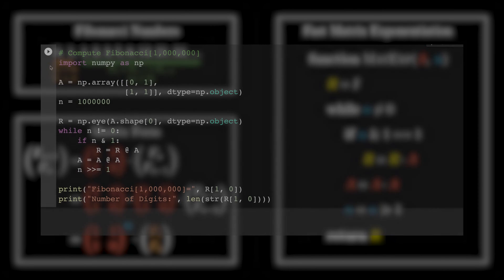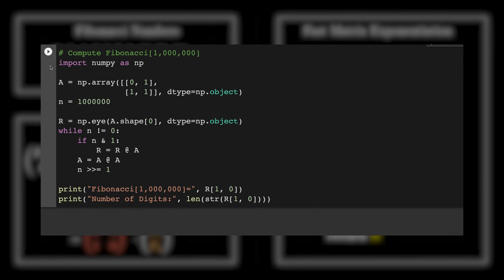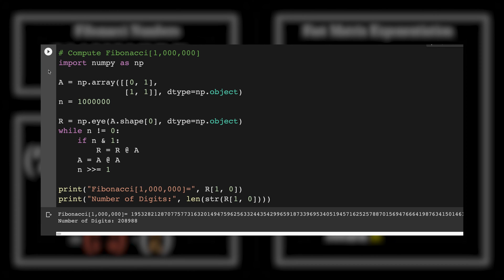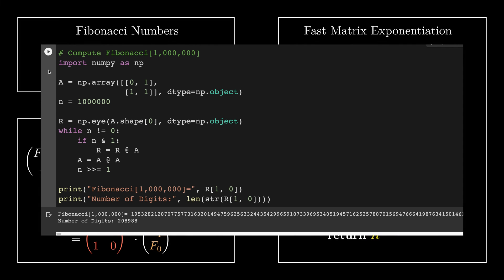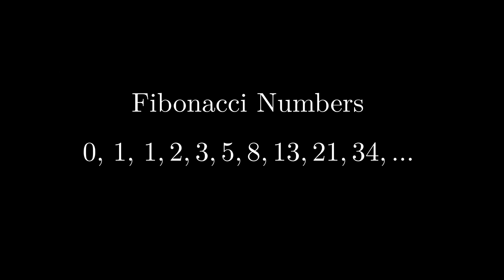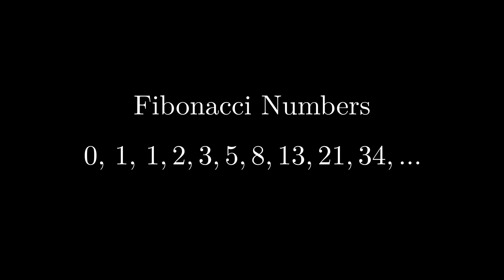Now, let's calculate the 1 millionth Fibonacci number in Python. This is the fast matrix exponentiation in Python. Let's run it. It has finished running. Looks like a huge number — the number has 200,000 digits. The Fibonacci sequence has a lot of amazing properties. We will dedicate a video to it in the future.